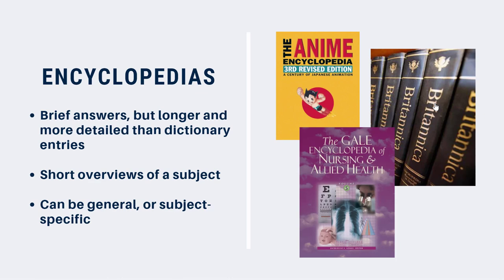Encyclopedias provide short overviews or summaries of a subject. They can cover a broad range of subjects or focus on one particular discipline. Encyclopedias are divided into articles or entries that are arranged alphabetically by name or sometimes by theme. These entries are longer and more detailed than an entry in a dictionary.